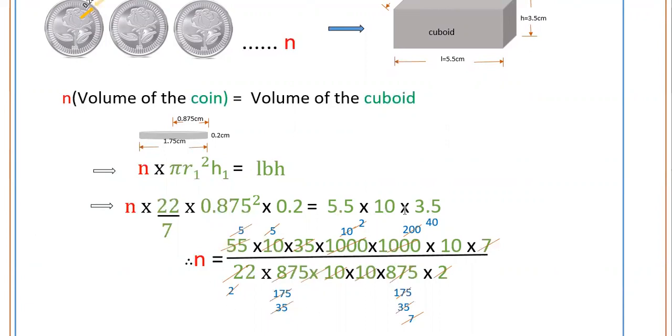Therefore n equals 5.5 times 10 times 3.5. You can write 5.5 as 55 by 10. This is 55 by 10 times 10 times 10 times 35 by 10. So 7 times 7 by 22 times 875.